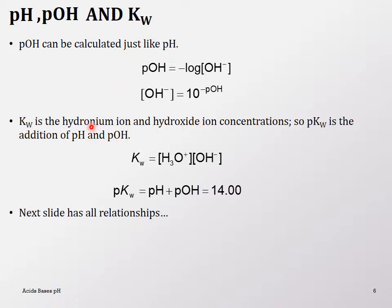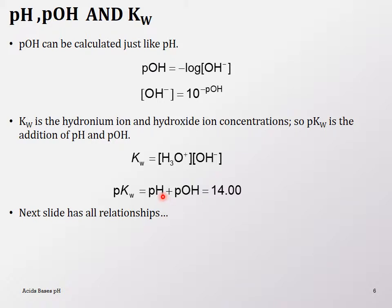Recall Kw, the equilibrium constant for water, equals the product of hydronium and hydroxide ion concentrations = 1×10⁻¹⁴. So pKw = pH + pOH = 14, because the negative log of 10⁻¹⁴ is 14. This means if you are given pH you can calculate pOH, and vice versa — just subtract from 14.